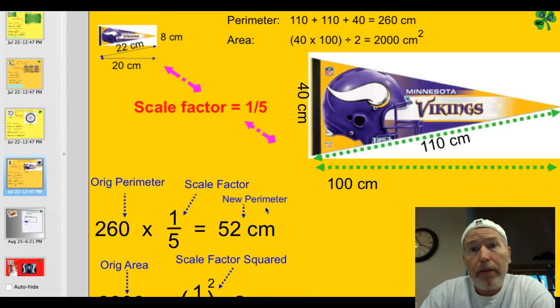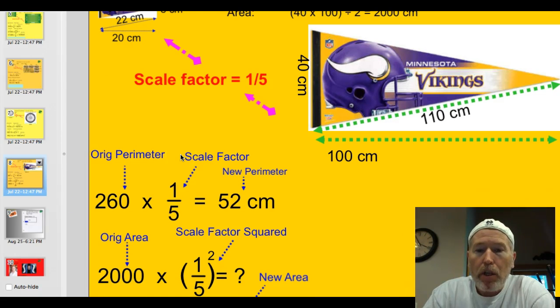So, if you got that, you did pretty well. I threw in these new dimensions here. If you could just divide these sides by 5, 40 divided by 5 would be 8, 110 divided by 5 would be 22. And, the new height would be 20 centimeters. Cool.